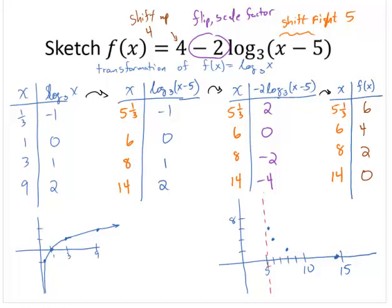I know it's asymptotic at x = 5. So I will show that asymptotic feature and then follow those points as a guideline to draw the smooth curve. There's the graph of f(x).